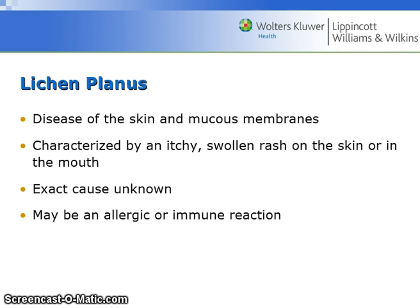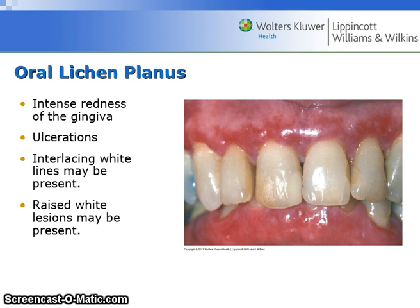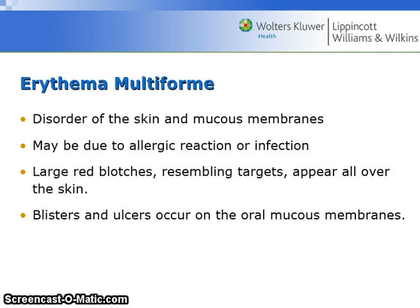Lichen planus is a disease of the skin and mucous membranes characterized by an itchy, swollen rash on the skin or in the mouth. The exact cause is unknown — idiopathic — and it may be an allergic or immune reaction. There is intense redness of the gingiva, ulceration, interlacing white lines known as Wickham striae, and raised white lesions may also be present.